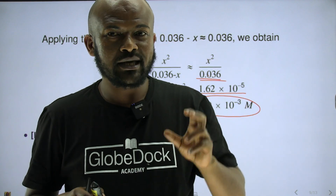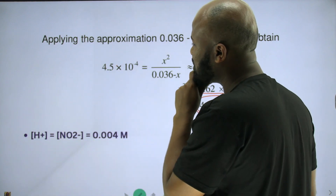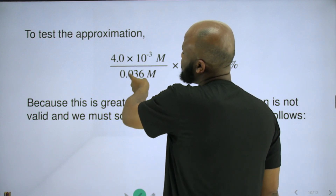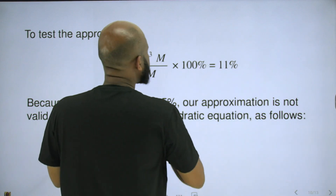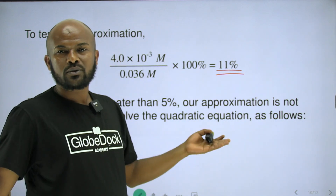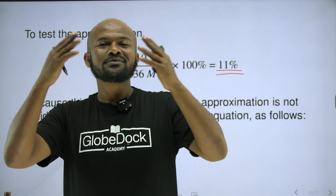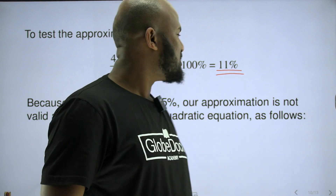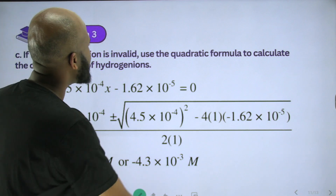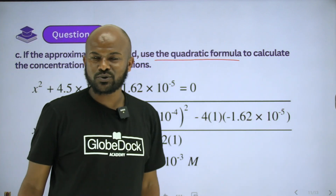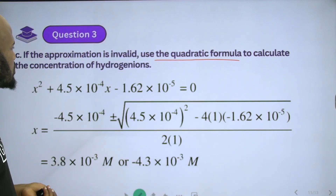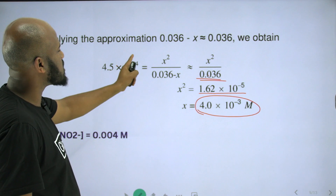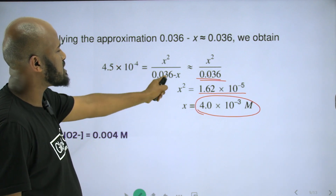The percent ionization equals 4.0 times 10 to the minus 3 molar divided by 0.036, which gives approximately 11%. Because the percent ionization exceeds 5%, the approximation is not valid. We need to use the quadratic formula. Ka equals x squared over 0.036 minus x.